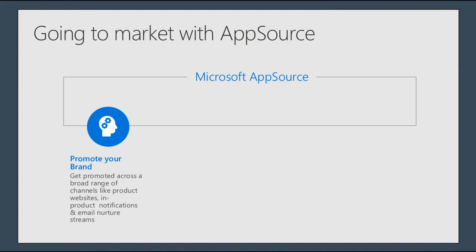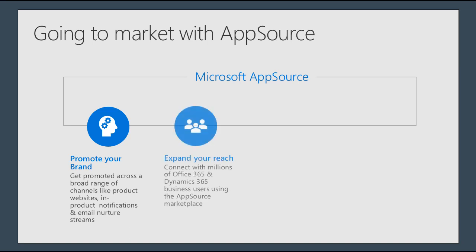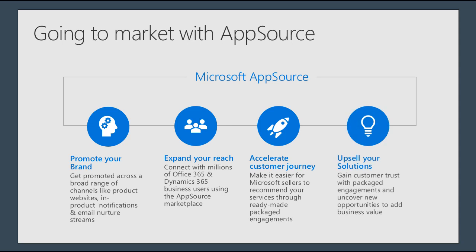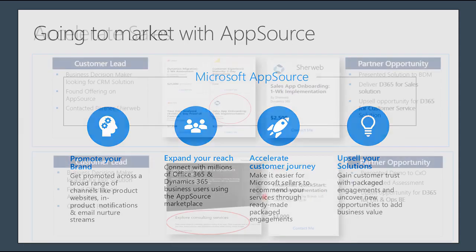The benefits of promoting your IP on AppSource as a system integrator: first, you promote your brand by associating it with Microsoft's name, gaining credibility and exposure. With 2 million monthly users on AppSource, you get in front of those users and gain a lot of reach. You're able to accelerate the sales cycle — I'll share examples of partners who in a matter of one to two weeks went from a customer finding their IP on AppSource to selling a full-blown solution. And lastly, you gain revenue and new customer additions to your portfolio.